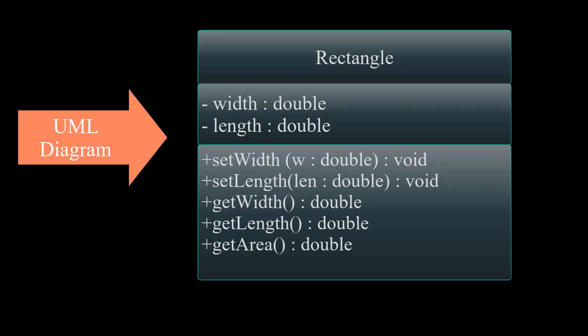Now that we understand what classes are, let's build a class called Rectangle from a Unified Modeling Language, a.k.a. UML Diagram. The following is a UML Diagram of a Rectangle class. A UML Diagram is a standard way to visualize the design of our programs, which you can easily translate into an object-oriented language such as Java.